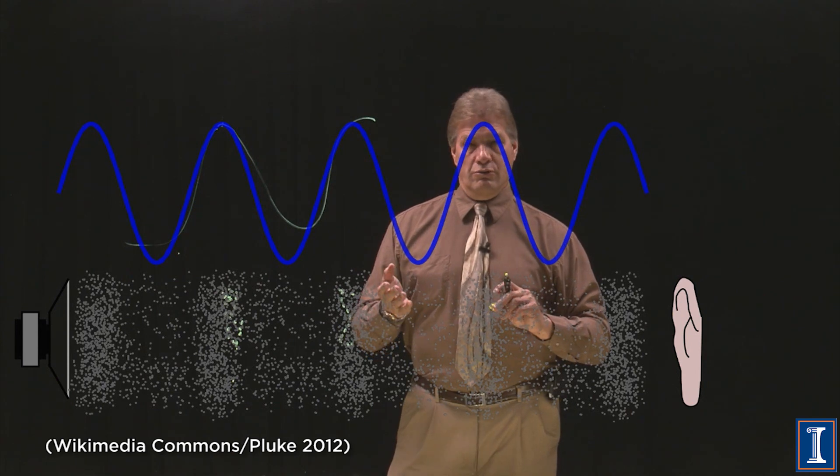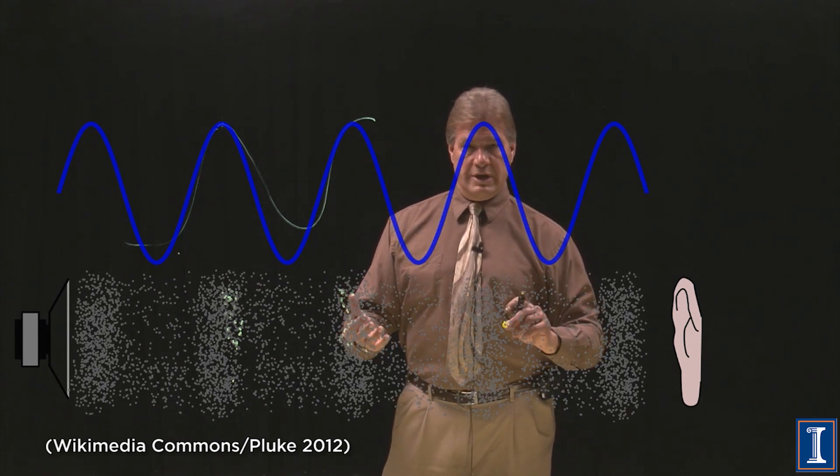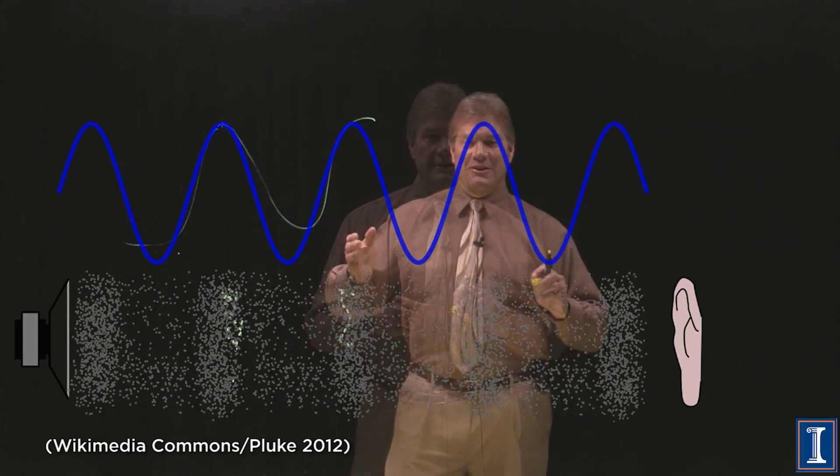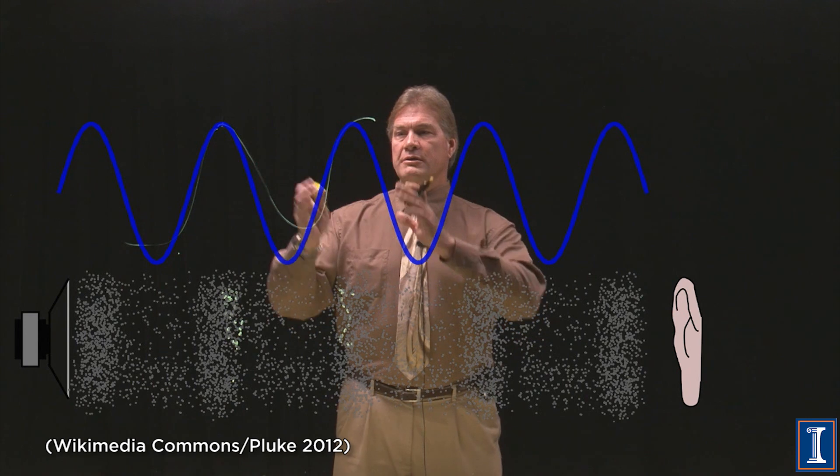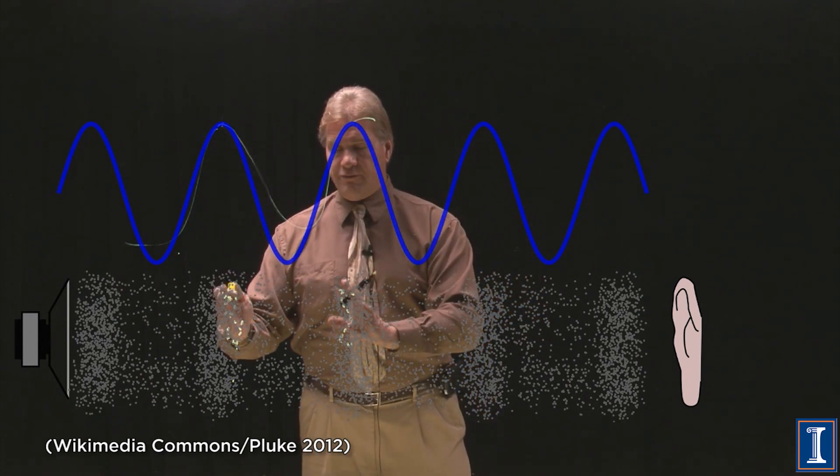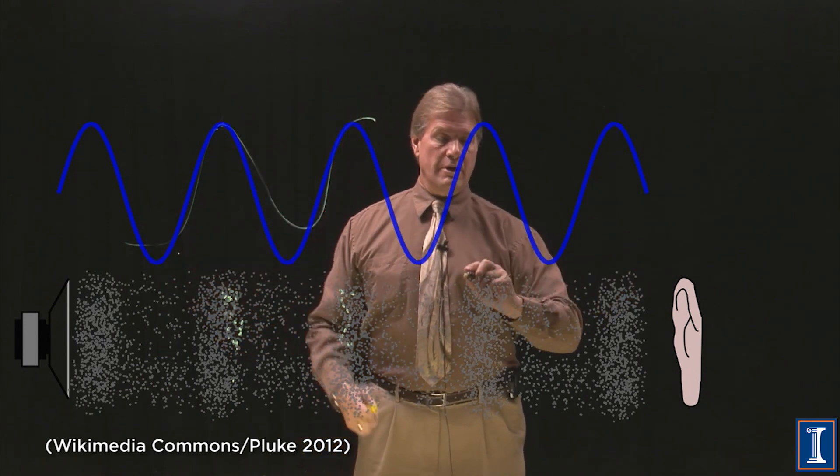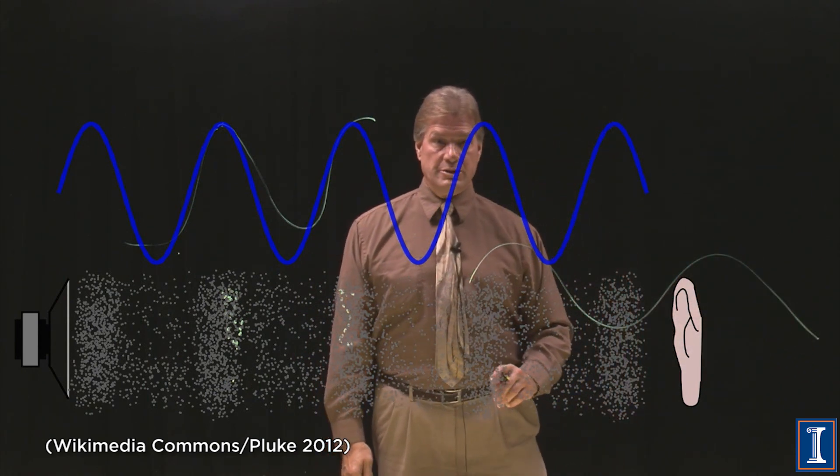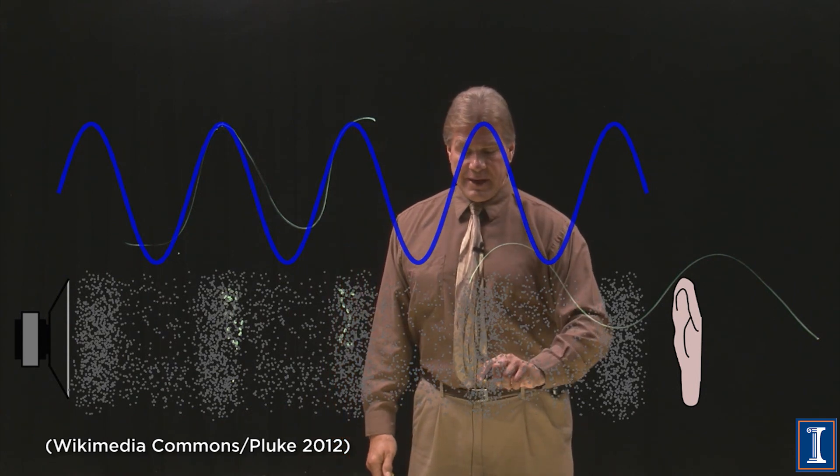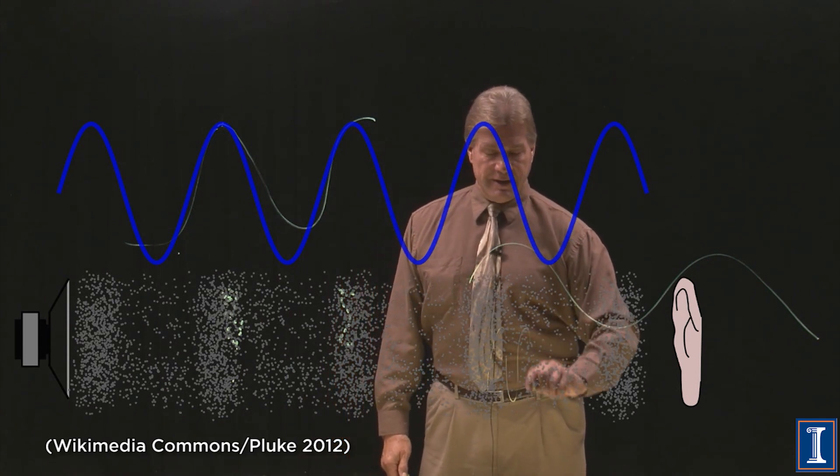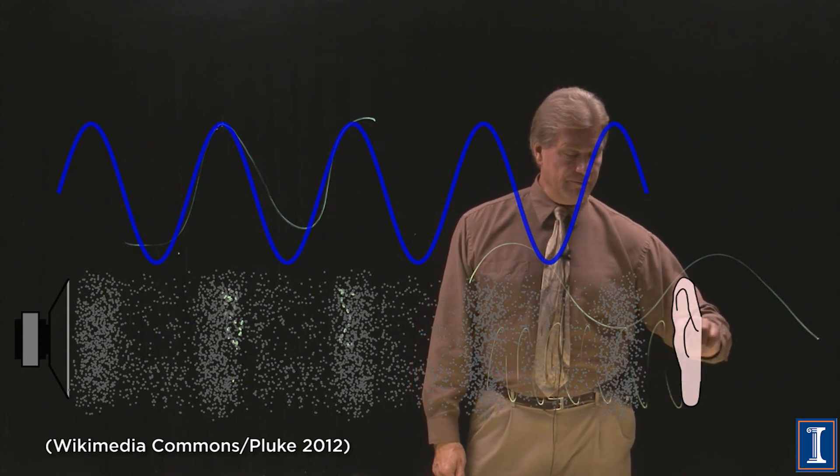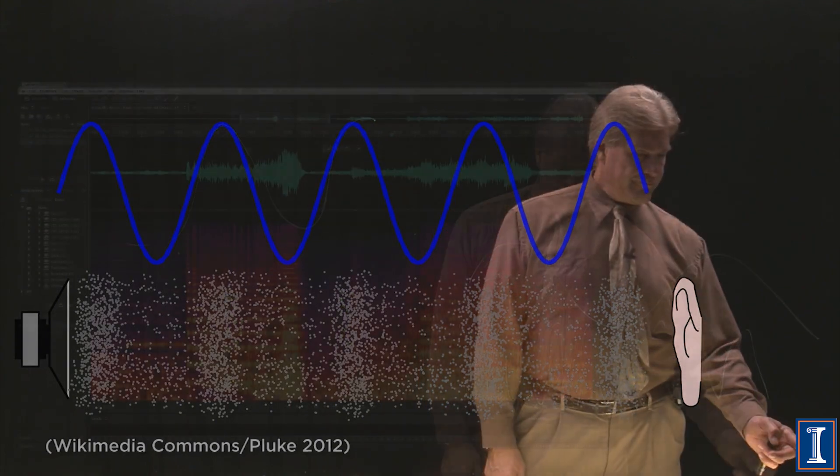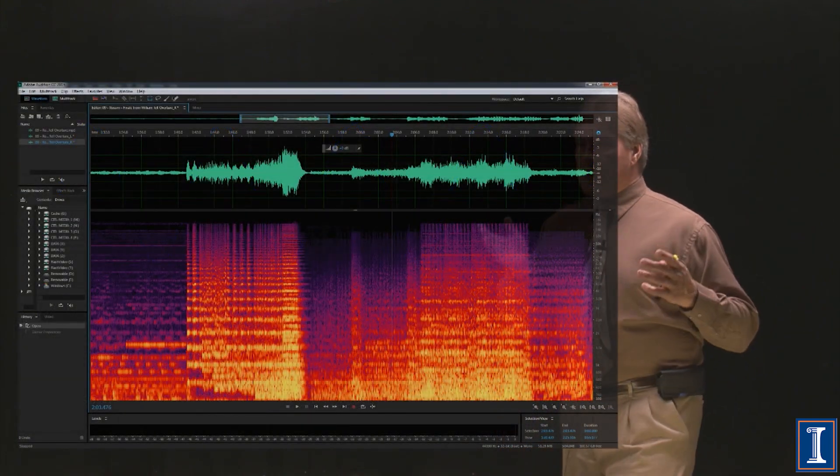The thing about sound is it can be at different pitches. You can have a really low sound or you can have a really high sound. The really low sound is because the frequency of these compression waves is larger. So if I have a low sound, it's a low frequency vibration. If I have a high pitch sound, it's a high frequency vibration.